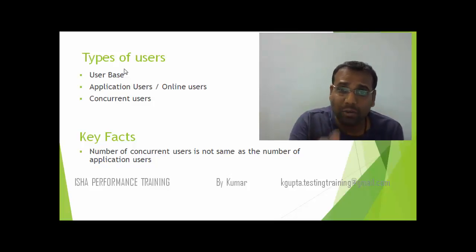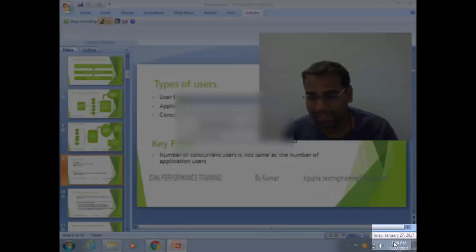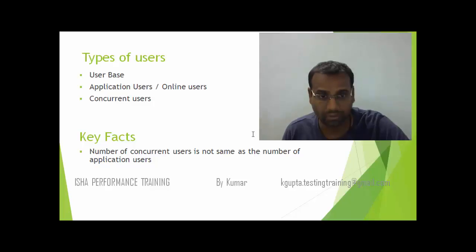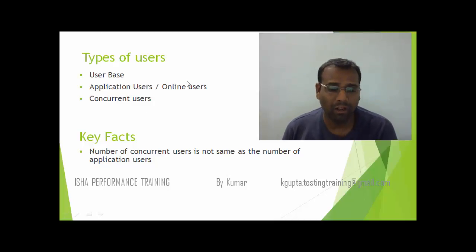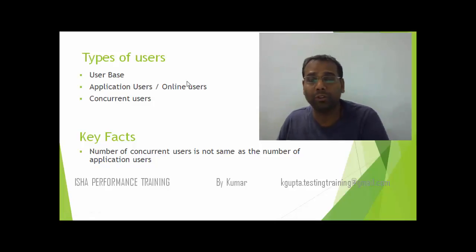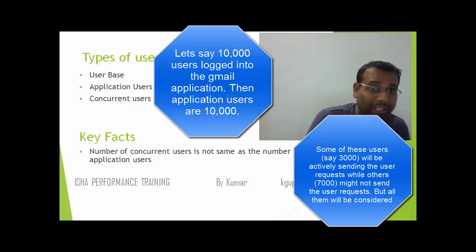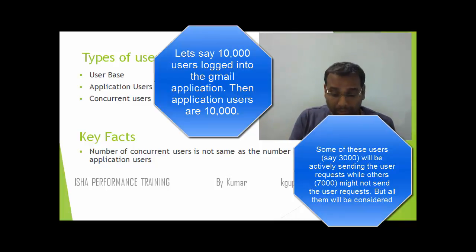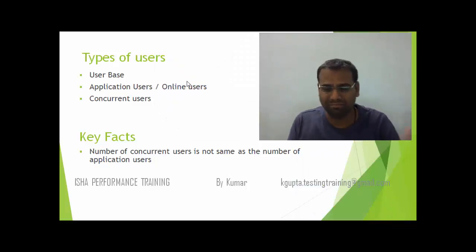The next thing is the application users or online users. These are the users who have logged in but might not be doing anything actively on the application at that point in time. Right now my clock shows 6:28, and at this point in time let's say there are 10,000 users who have logged into the Gmail application. These are online users or application users.